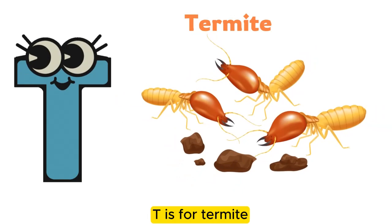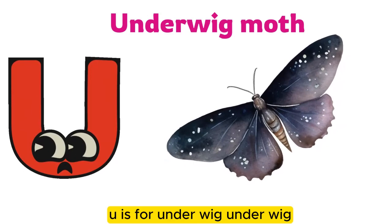T is for Termite. T-T-T-T-T-T-T-T-T, Termite. U is for Underwing Moth. U-U-U-U, Underwing Moth. V is for Velvet Ant. V-V-V-V, Velvet Ant.